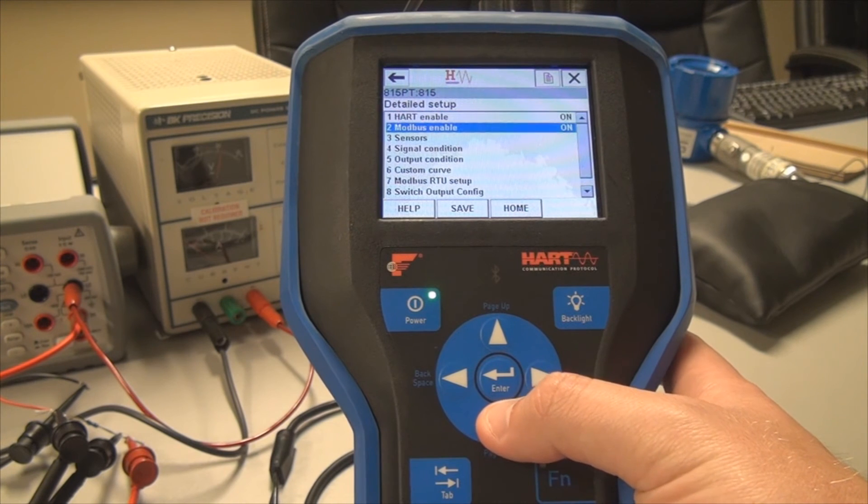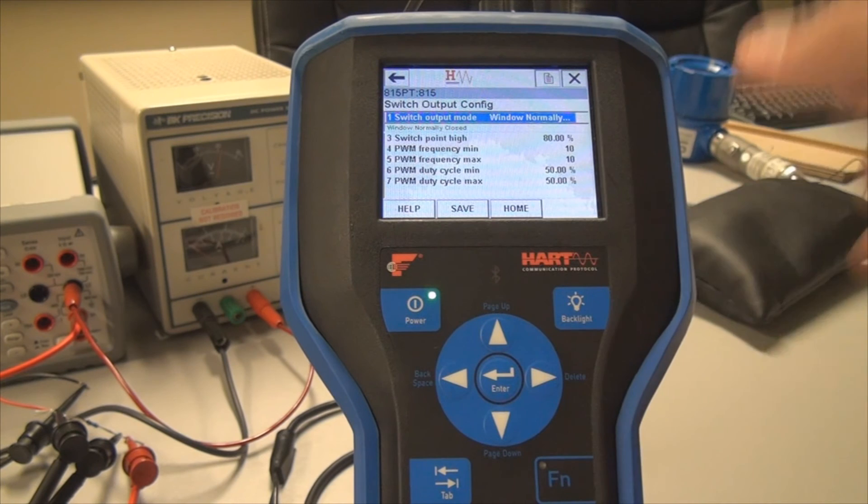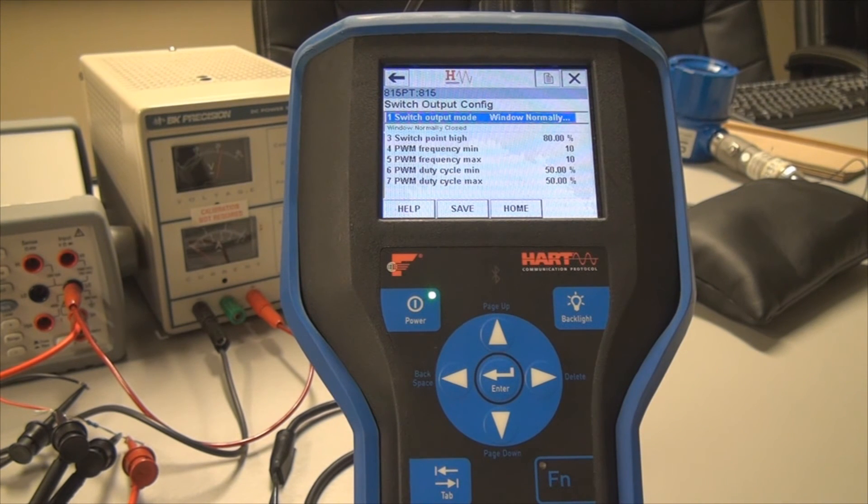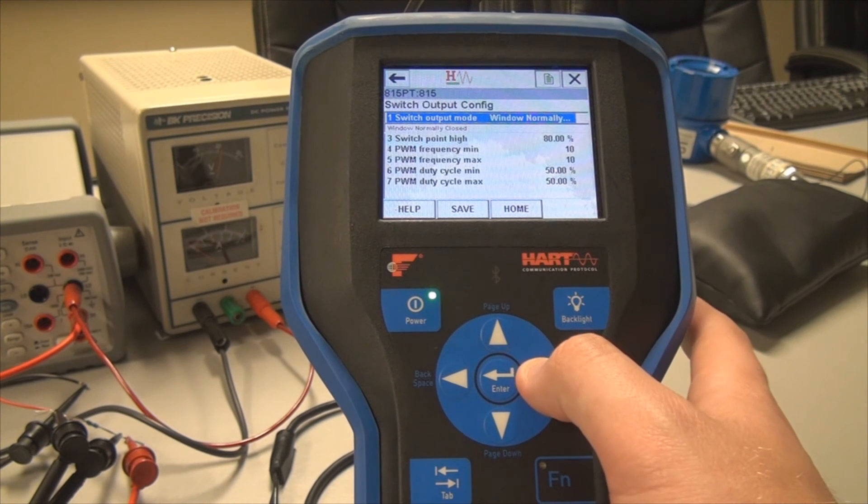To do that, you go to six, detailed setup, click the right arrow, and then you come down to number eight, switch output configuration. Here you can set the settings, where the set points are at, which type of mode you'd like to use.